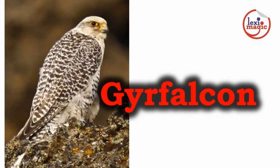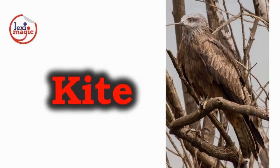The gyr falcon is the largest of the falcon species. Their plumage ranges from dappled white to pure black. They breed in the cold tundra regions of North America and Asia. Kites are diurnal raptors with a distinctive wedge-shaped tail and black area around their red eyes. There are over 20 species of kites.